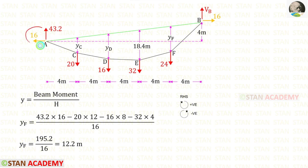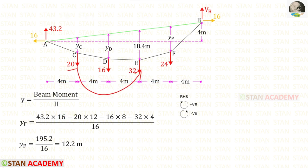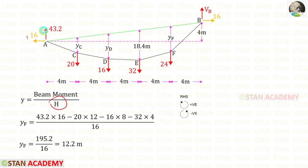We have found the horizontal thrust H. Using that, we can find the dips YC, YD and YF. First, let us find the dip YF. The vertical reaction is acting clockwise with distance 16, positive. The loads are acting anti-clockwise with distances 12, 8 and 4, negative. Using the known horizontal thrust of 16, for YF we will get 12.2 meter.